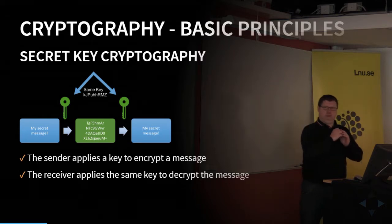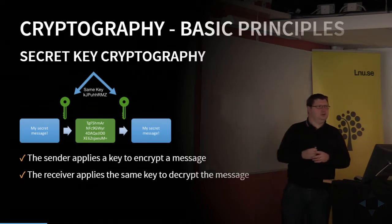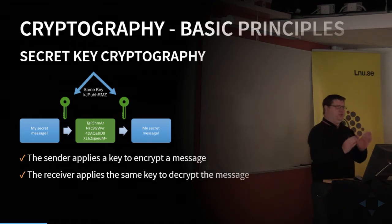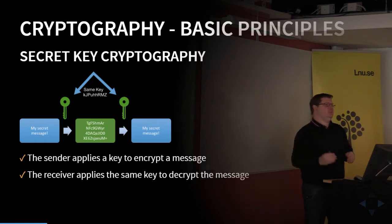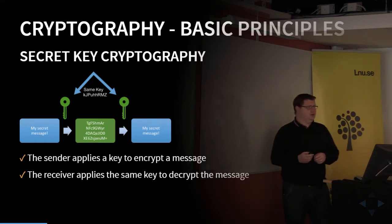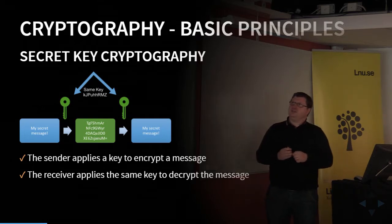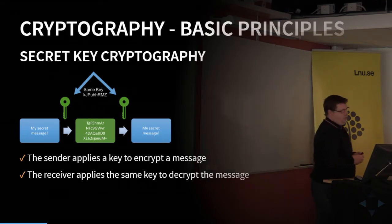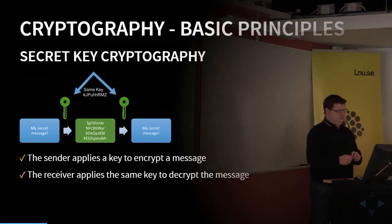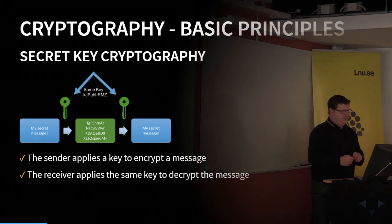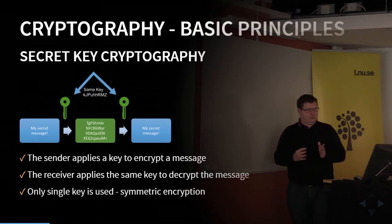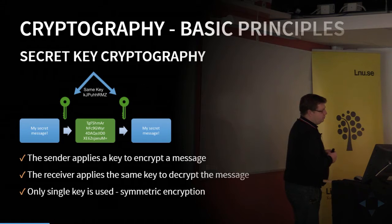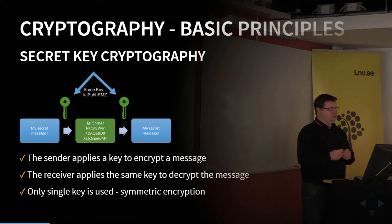This has been used for centuries — Caesar did this during Roman times. He just moved the alphabet some steps and took the next characters. That was quite a simple secret key: how many steps you move the alphabet. Today's algorithms are more sophisticated, but we only have one key here — the same key for both encryption and decryption. We usually call this symmetric encryption.